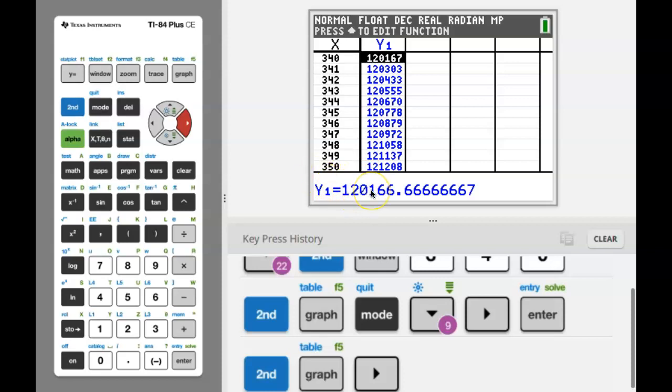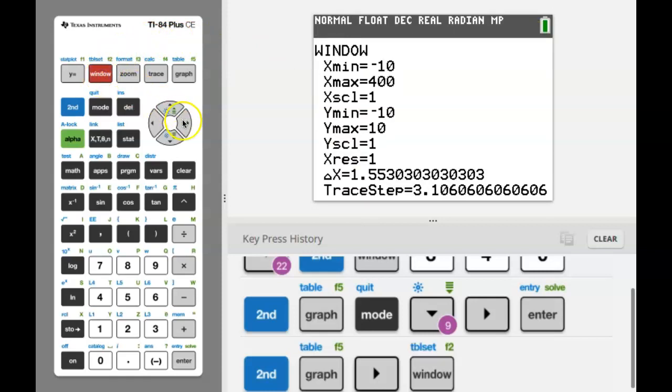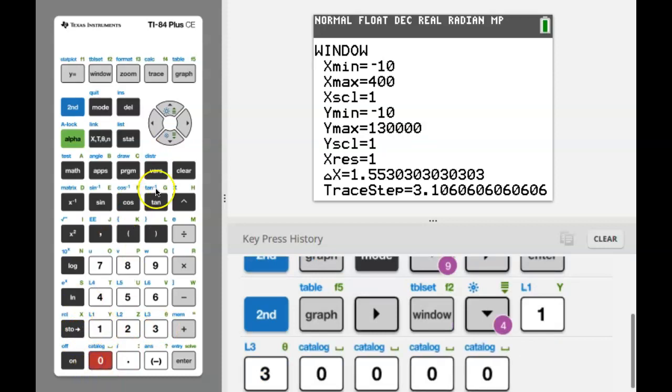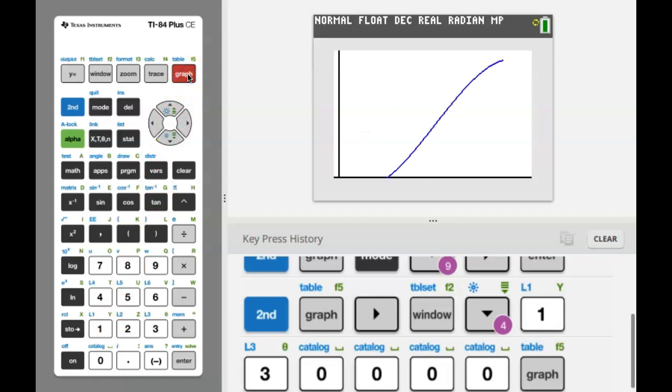So this tells me I need to change my Y values to a much larger profit in order for me to see the graph. So I'm using the table to inform my decision regarding what I'm going to choose for my window. So let's go back to the window. This time I'm going to arrow down and change my Y max. And we just said the profit was around 120,000. So let's choose something larger than 120,000. Maybe I'll put in 130,000 for my Y max and then graph. And hopefully we see a little bit more of the graph. And indeed we do.